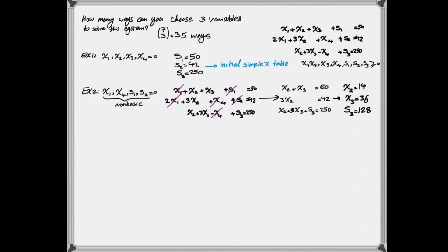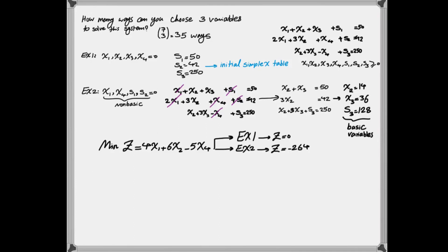Remember, we had an objective function at the beginning that we dismissed. We are not just solving this system, but solving it with respect to an objective — specifically to minimize the objective function. Comparing the two solutions: plugging example one's values into the objective gives z equal to zero, while example two gives z equal to negative 264. Since we're minimizing, the second solution is better. But simplex doesn't search all possible alternatives — it works toward the best solution in a smart manner.